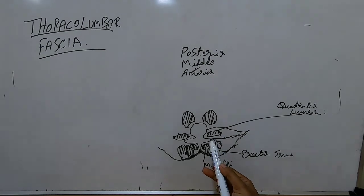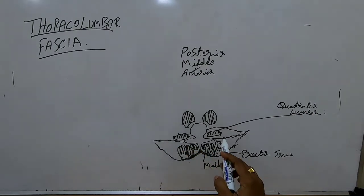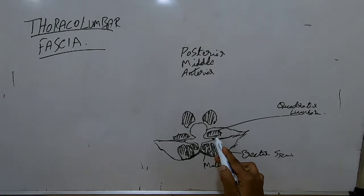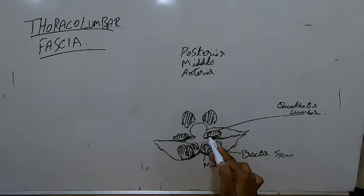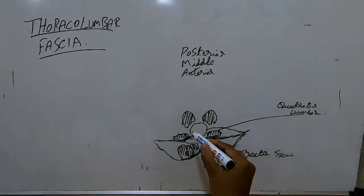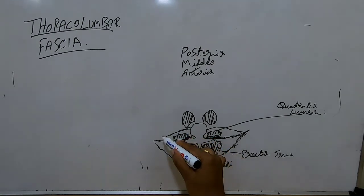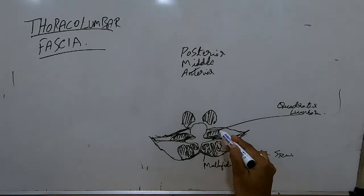The middle layer starts from the transverse process on both sides, on the posterior side of the quadratus lumborum muscle. It goes on to merge at the lateral border. Then the anterior layer starts from the anterior surface of the quadratus lumborum muscle, covering the quadratus lumborum on both sides.